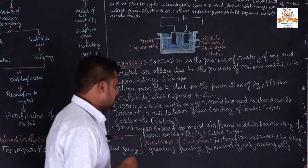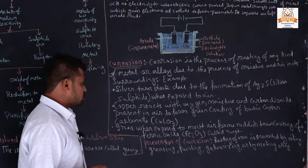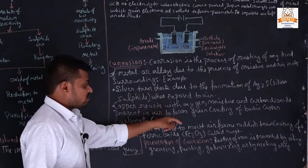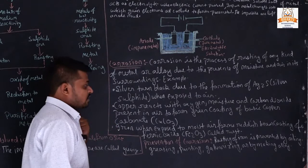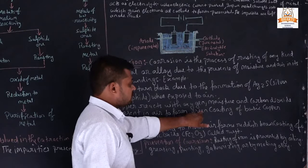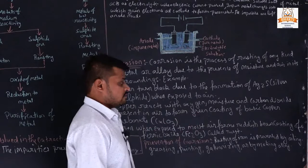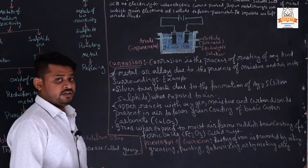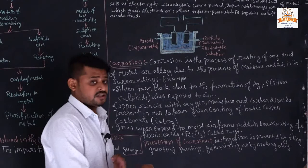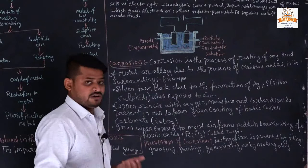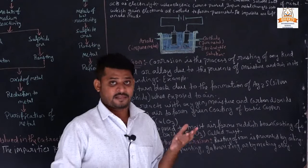Iron, when exposed to moisture, gets rusted — in Hindi we say 'zang lagna'. That is another example of corrosion. How will we prevent corrosion? We can apply oiling, greasing, painting, or galvanization. There are many methods to prevent corrosion.